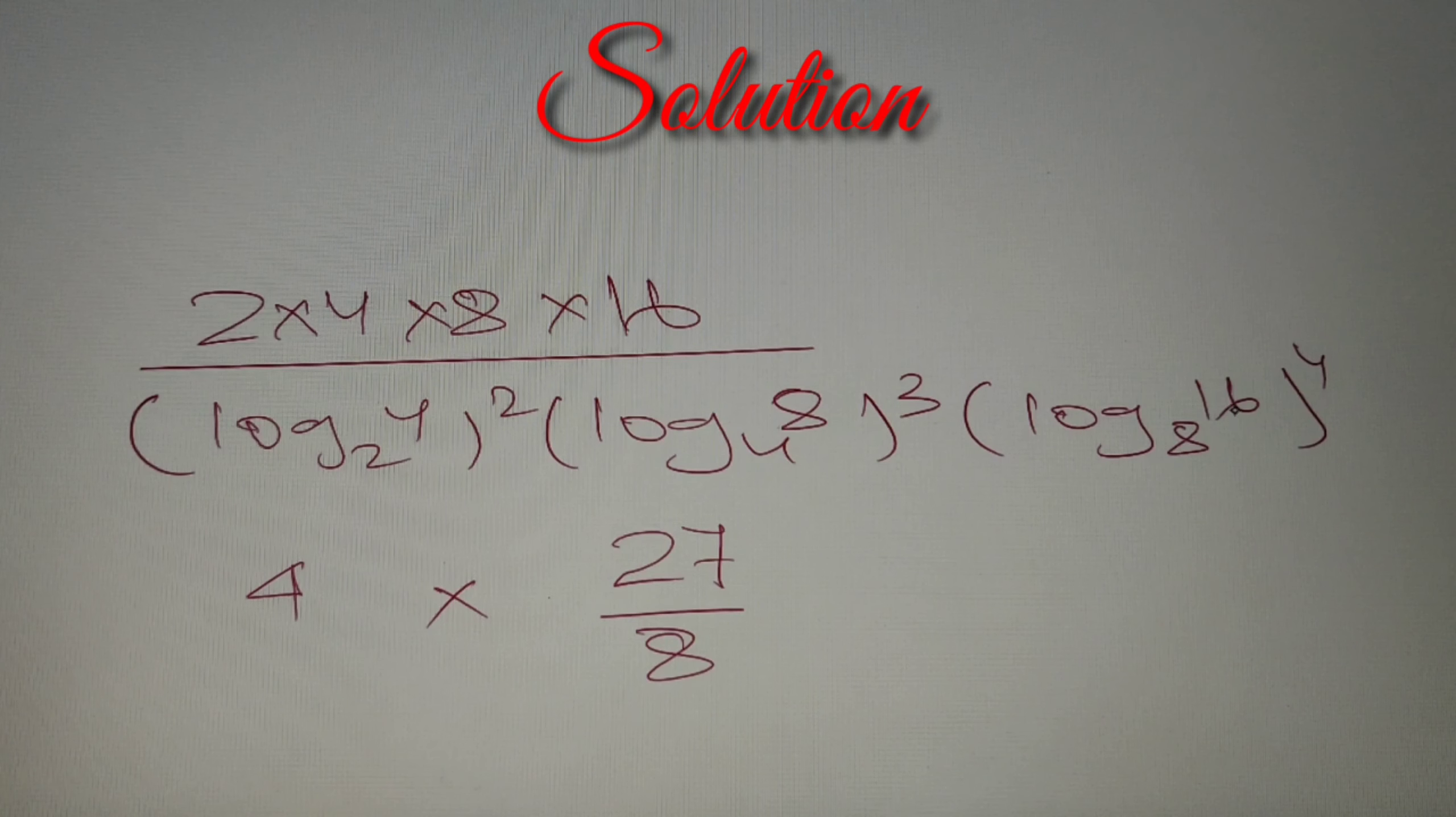Now let's move on to our third bracket. We have log 16 to the base 8. Log 16 to the base 8 can be written as log 2⁴ base 2³. We can write it as 4/3 log of 2 base 2, which equals 1. So we have 4/3 raised power 4 as the final answer.